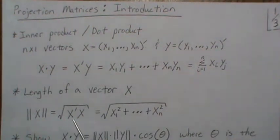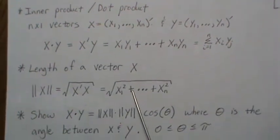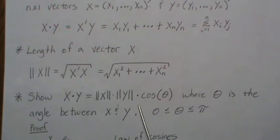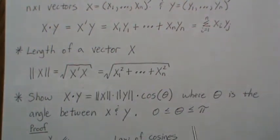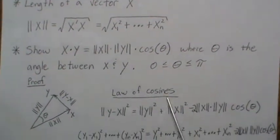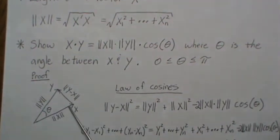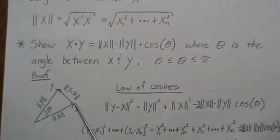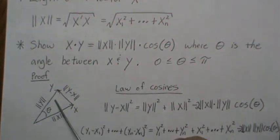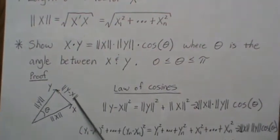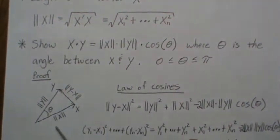Now let's show that the dot product can be thought of as the length of X times the length of Y times the cosine of theta, where theta is the angle between vectors X and Y, and we only look at angles between 0 and pi. We have a generic X vector, a generic Y vector, and the angle between them. The length of X is this value, the length of Y is this number, and the vector going from X to Y is Y minus X.